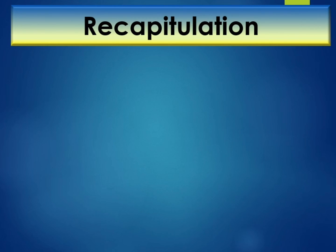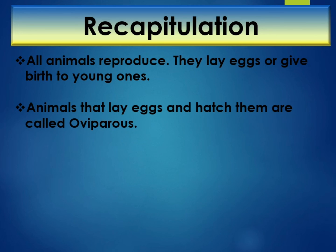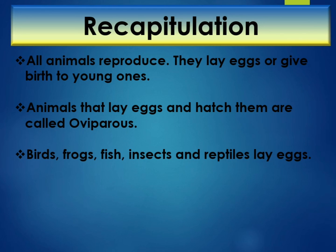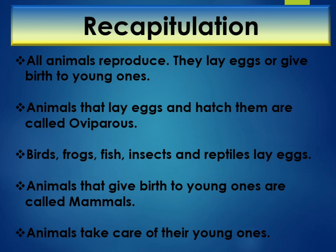Let us revise what we have learned in this chapter. All animals reproduce — they lay eggs or give birth to young ones. Animals that lay eggs and hatch them are called oviparous. Birds, frogs, fish, insects, and reptiles lay eggs. Animals that give birth to young ones are called mammals. Animals take care of their young ones.